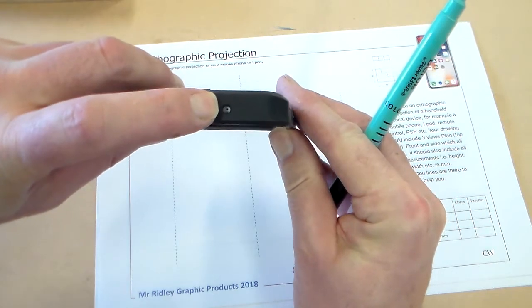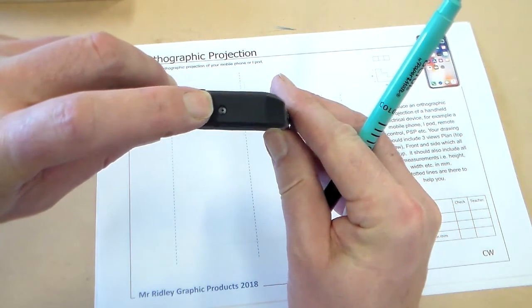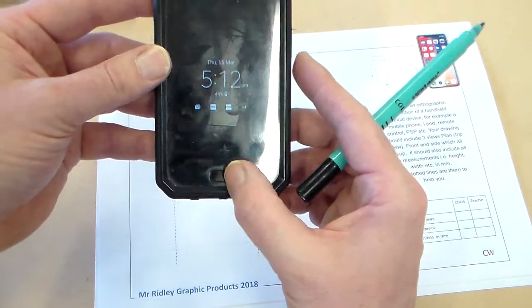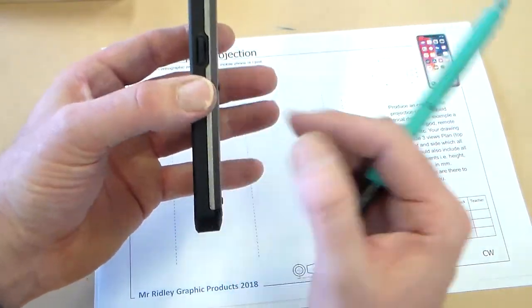So with a plan view, I think that's the microphone there, at the front we've got buttons, at the side we've got buttons.